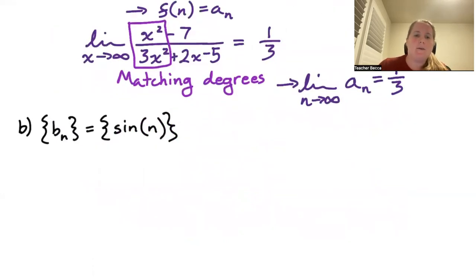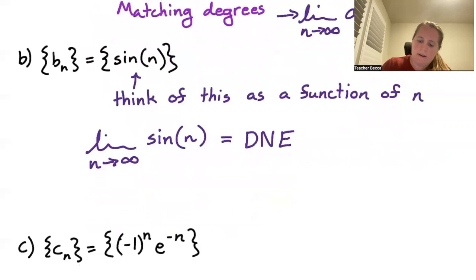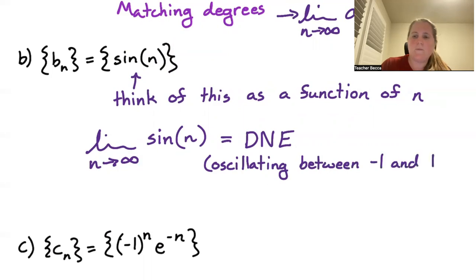So if we have b_n now is equal to sin(n), we can just think of this as a function of n. If we take the limit as n goes to infinity of sin(n), sine oscillates forever, so this does not exist. And so it's oscillating between -1 and 1. So that means, then, that this is divergent, or it diverges.